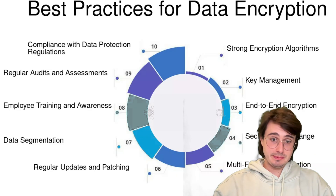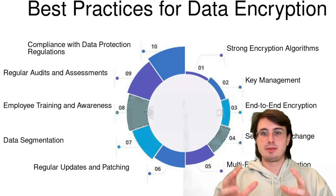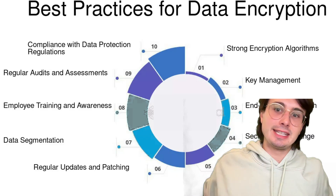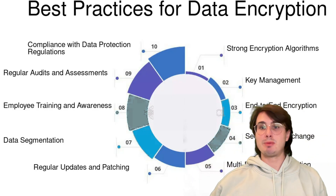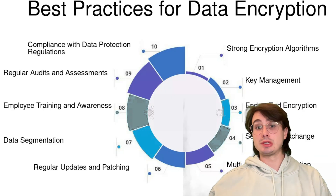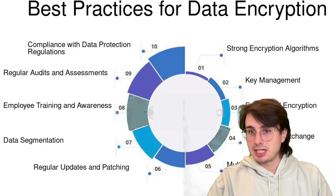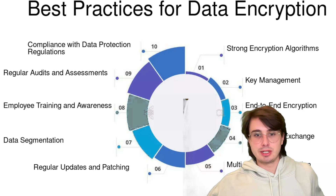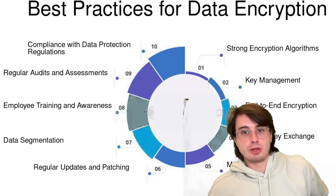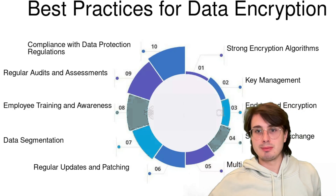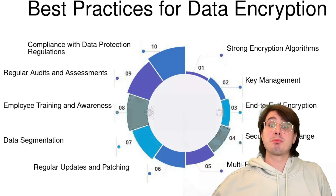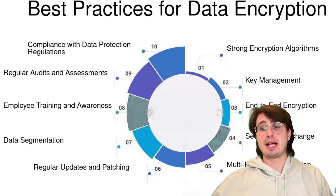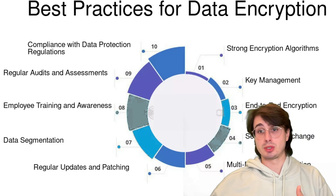For key management, implement best practices to protect your encryption keys. Use dedicated key management services like AWS KMS or Azure Key Vault. Implement key rotation policies — typically quarterly for high-sensitivity data. Separate key storage from encrypted data; you don't want to store them in the same location. Use hardware security modules for critical keys, and consider implementing key escrow procedures for high-compliance use cases to meet those regulatory requirements.